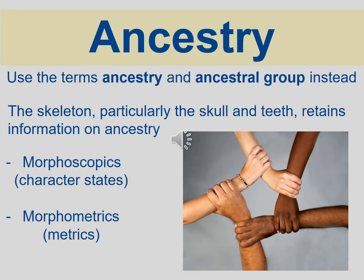We use the term ancestry because that's effectively what you're doing — you're looking at the ancestral line of the decedent before you, because both genes as well as the traits that manifest from those genes are because of ancestral heritage. They can be from specific continental groups, and race is not a good term to encapsulate the biological variation that you see. We do this in two different ways in terms of methodology.